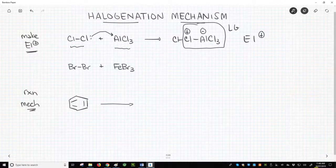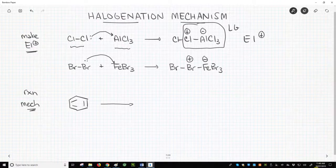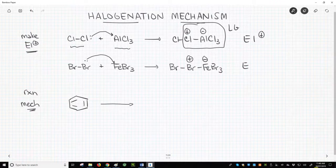The chemistry from the bromination is nearly identical. FeBr3 binds a lone pair from Br2 to form a similar complex, which is also a very strong electrophile.